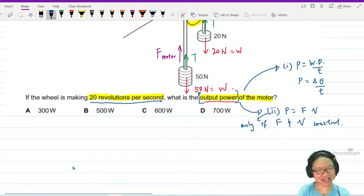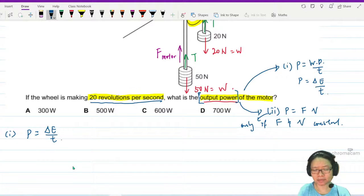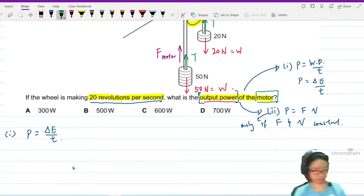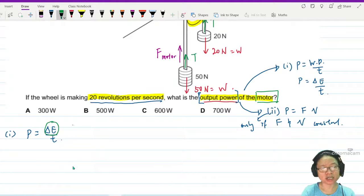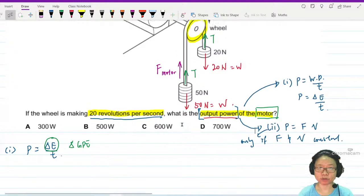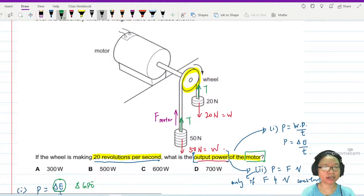Method one, power is change in energy over time. So the question to ask yourself is, why my friend Motor, what energy did you change? What are you responsible for, Motor? And then the Motor is like, I change the GPE. So this change in energy is the change in GPE, the net change in GPE of my system. So let me try to figure out in one second, how much height would the 50 Newton slotted mass go up? I can find in one second, how high, what would H be.